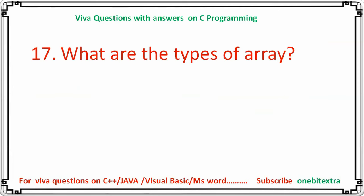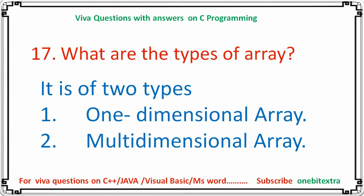Next question: what are the types of array? There are two types: one-dimensional array and multi-dimensional array. In a one-dimensional array elements are in a row, while multi-dimensional arrays can show elements in both rows and columns.